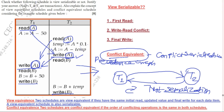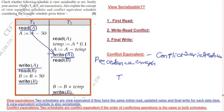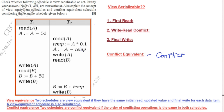This was about conflict equivalent. Now we will check whether the schedule is view serializable. For view serializability we check three conditions: first read, write-read conflict, and final write. T1 is reading variable A first.